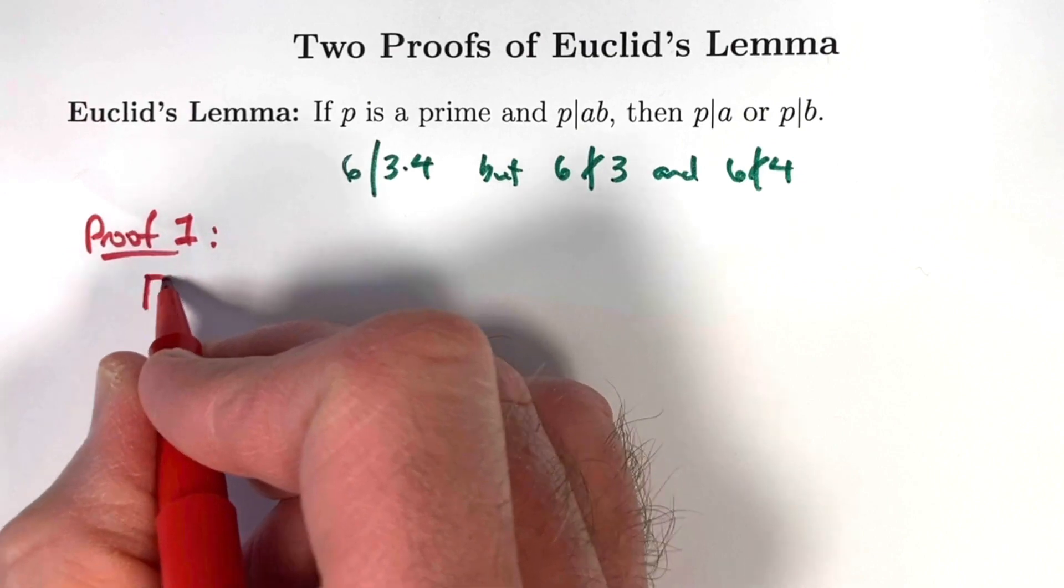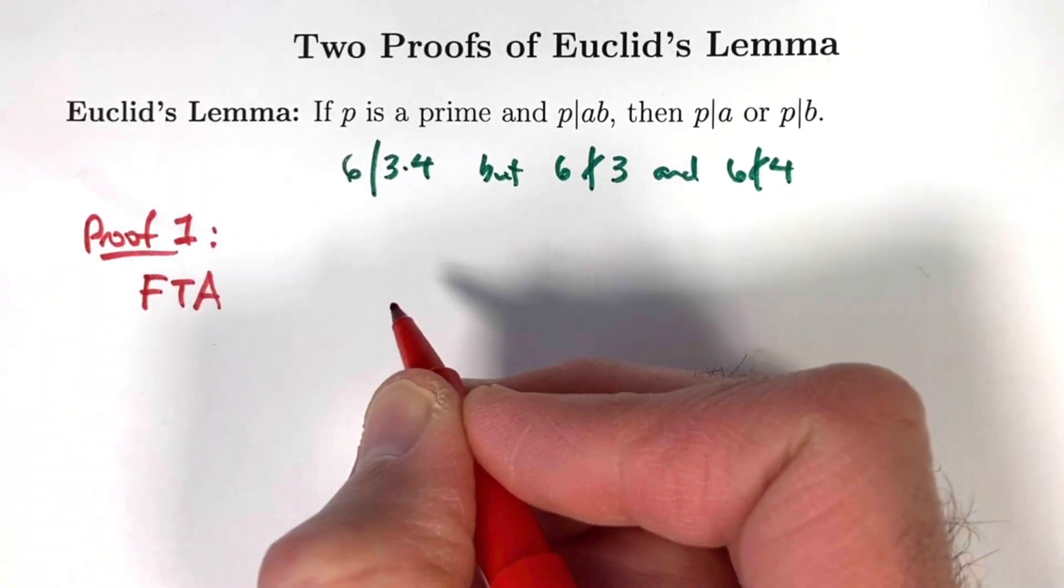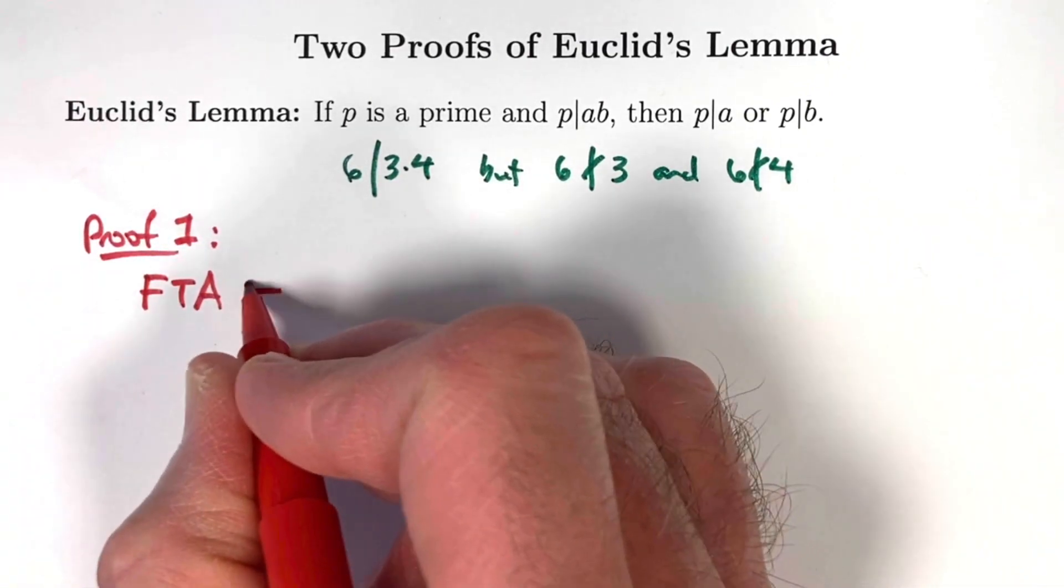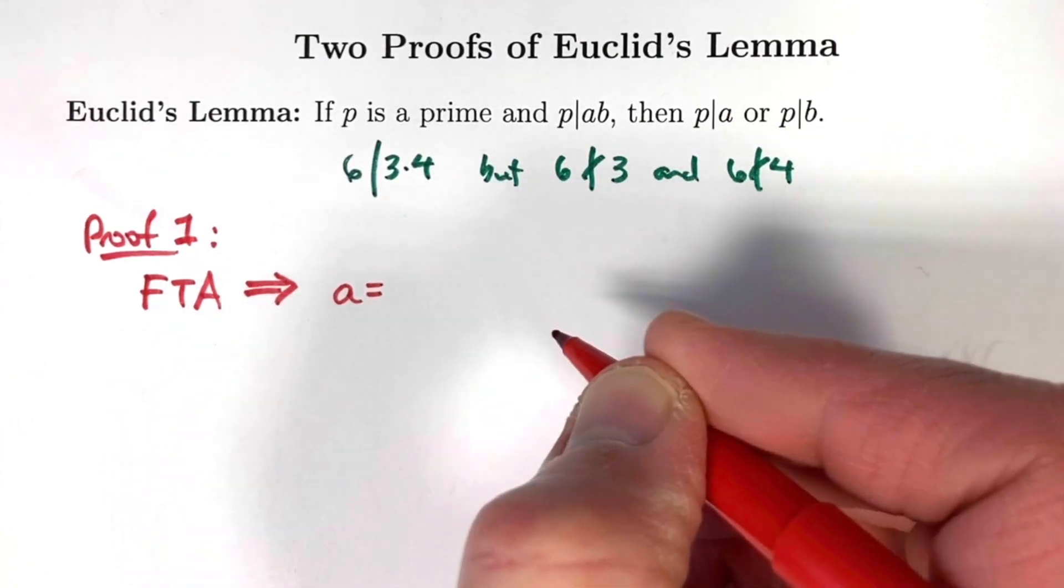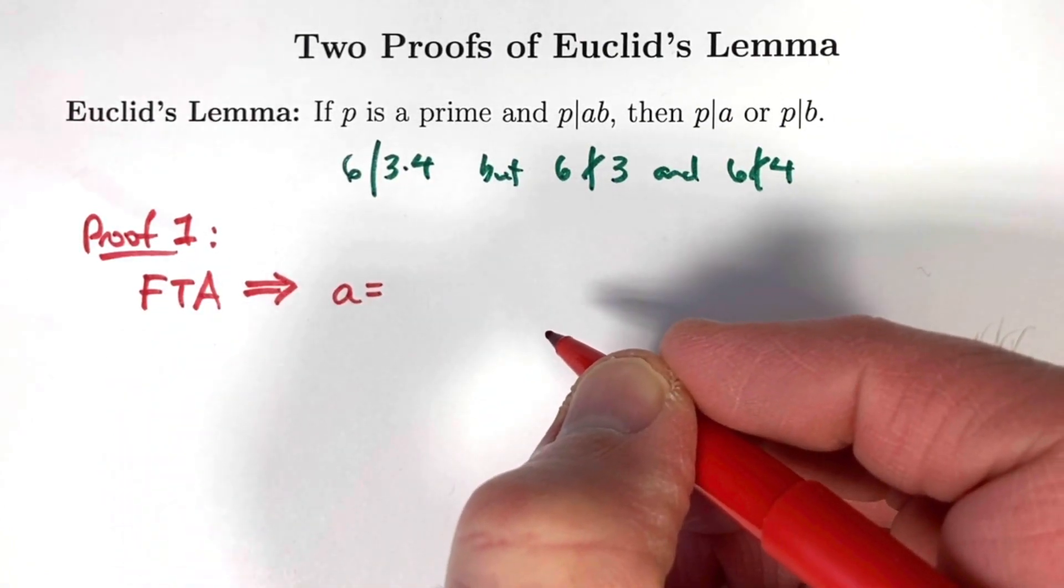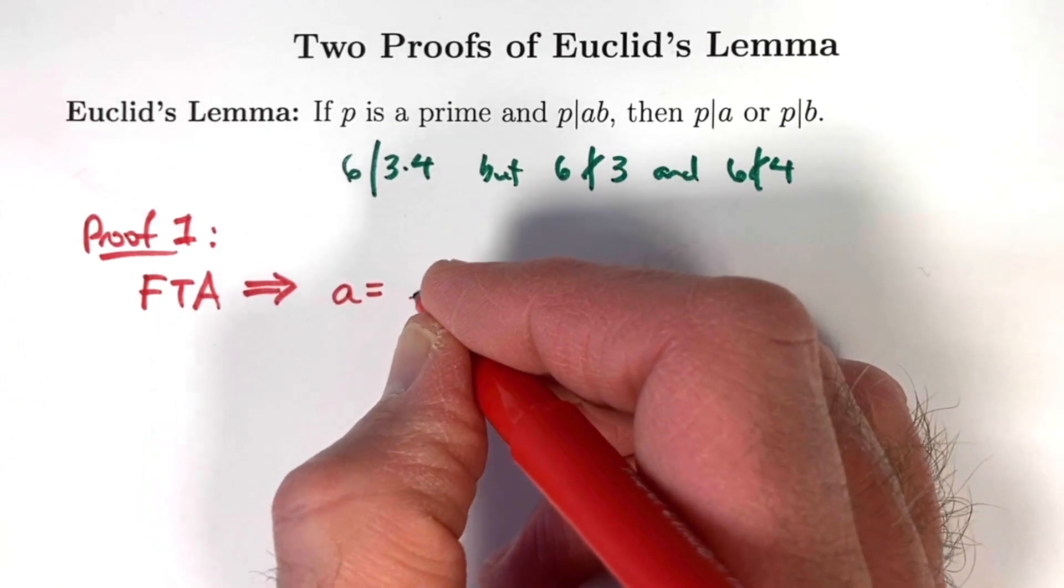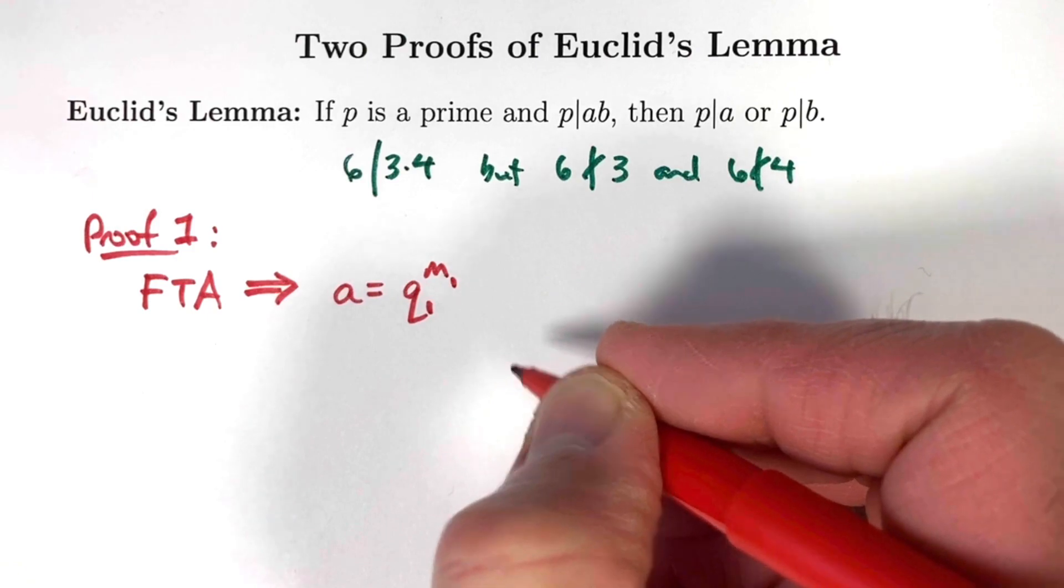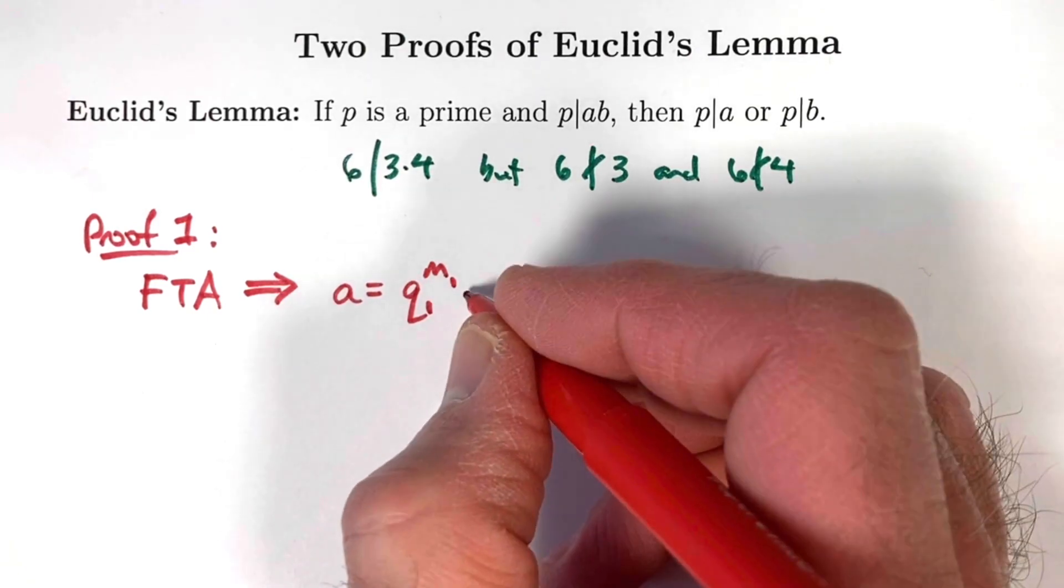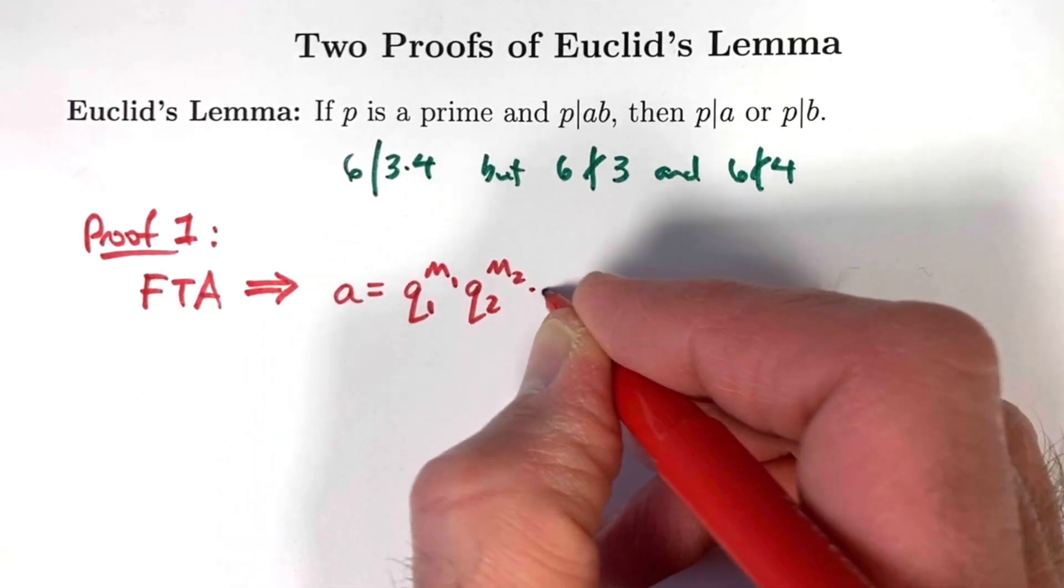Start with the fundamental theorem of arithmetic. The fundamental theorem of arithmetic implies that both a and b have unique prime factorizations. Say a is q₁^m₁ where q₁ is prime and m₁ is some positive power, times q₂^m₂, etc.